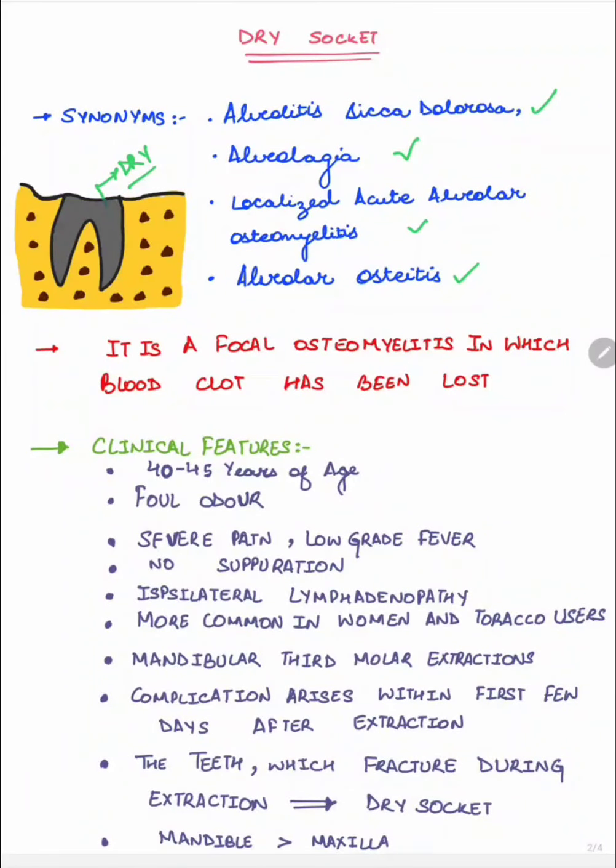Now the clinical features of dry socket. Dry socket occurs more commonly in women and tobacco users. It occurs most commonly at the age of 40 to 45 years. The patient will complain of foul odor due to food lodgment in that empty socket.